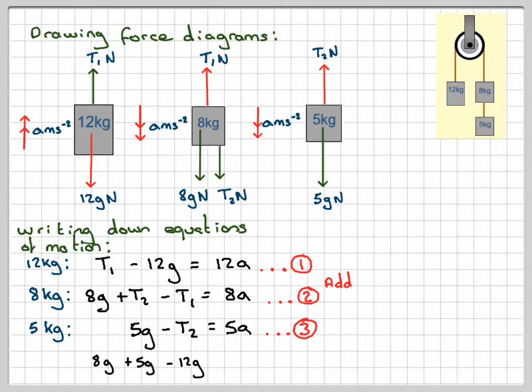So don't forget, the T1s cancel out and the T2s cancel out if you add them. And then we've got to do 12 plus 8 plus 5, which is going to be 25 lots of a. So 8g plus 5g minus 12g just gives me 1g, which is g, is equal to 25a. And therefore, a will be equal to g over 25 meters per second squared.